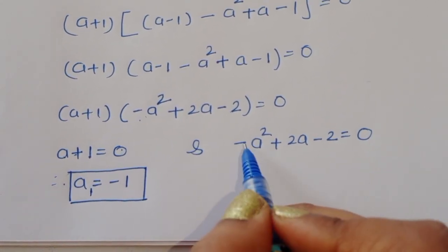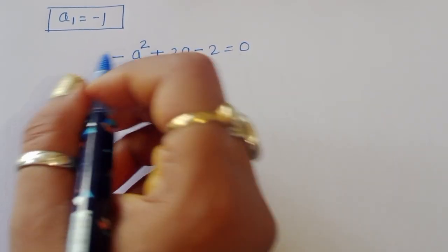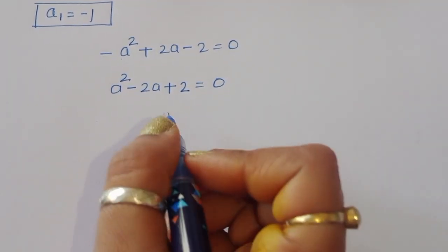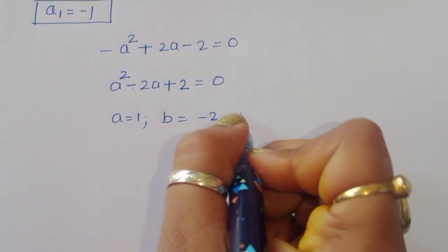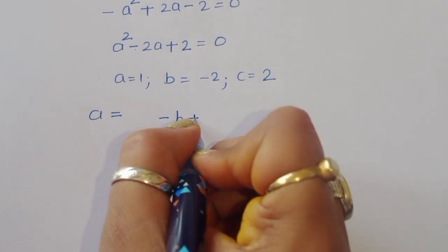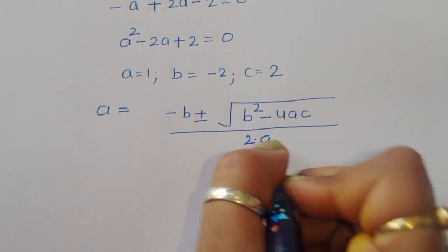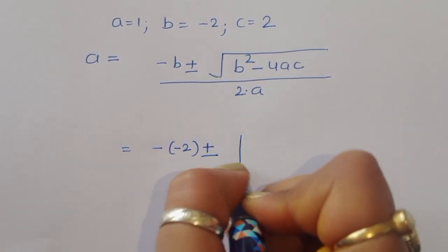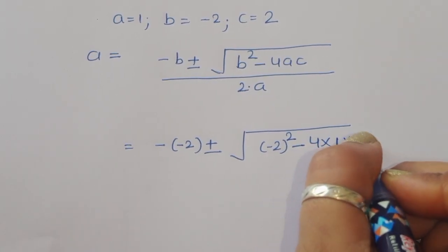Now solving the second equation: minus a squared plus 2a minus 2 equals 0. Multiplying by minus 1 gives a squared minus 2a plus 2 equals 0. Here the coefficient of a squared is 1, b equals minus 2, and c equals 2. Using the quadratic formula: a equals minus b plus or minus square root of b squared minus 4ac, all divided by 2a.